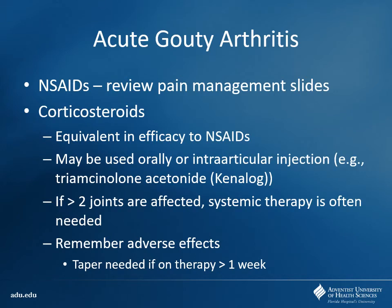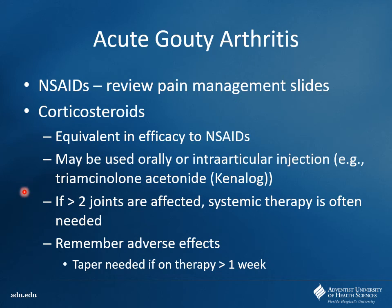Review the NSAID slides — for high-risk CV patients, you probably want a non-selective NSAID; for high-risk GI patients, focus on a COX-2 selective. For corticosteroids, they have pretty equivalent efficacy to NSAIDs but we want to limit use. You can use them orally, but there are systemic side effects. If only a single joint is affected, intraarticular injection can be used — something like triamcinolone. Once two or more joints are affected, you need more systemic therapy. If they need corticosteroids for greater than a week, taper them off slowly to avoid adrenal suppression.